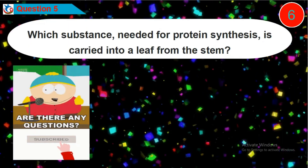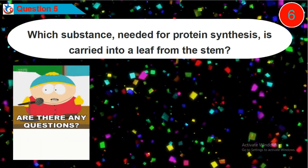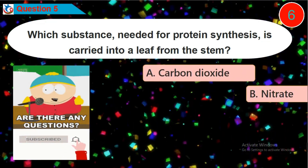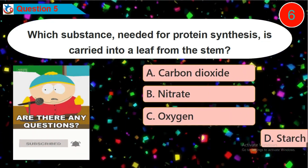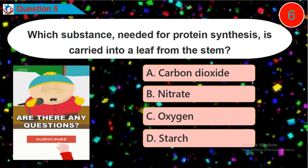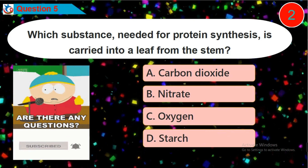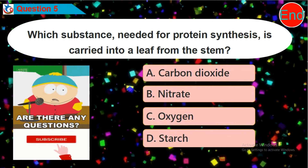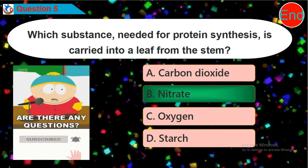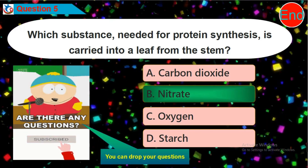Question five: which substance needed for protein synthesis is carried into a leaf from the stem? Is it option A, B, C, or D? Please like this video, subscribe to this channel, and click the bell button — it's totally free.